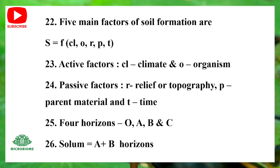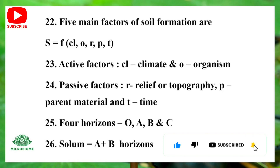The 5 main factors of soil formation are: S = f(CL, O, R, P, T). Active factors: CL refers to Climate and O stands for Organism. Passive factors: R for Relief or Topography, P for Parent material, and T for Time. The 4 horizons are O, A, B, and C.